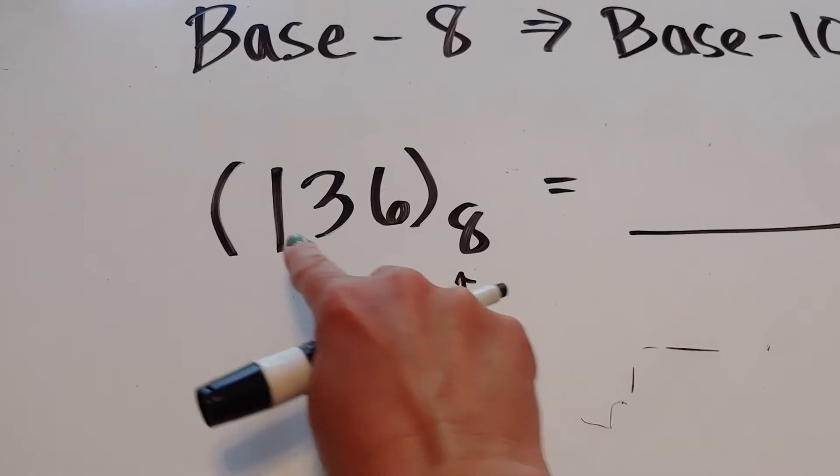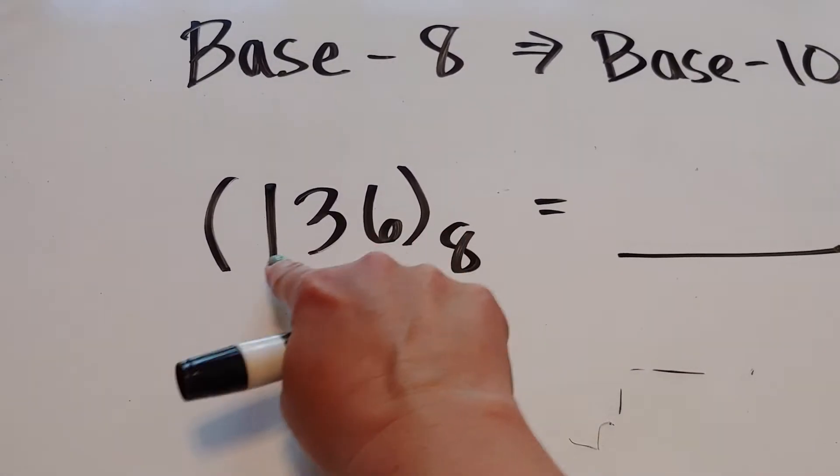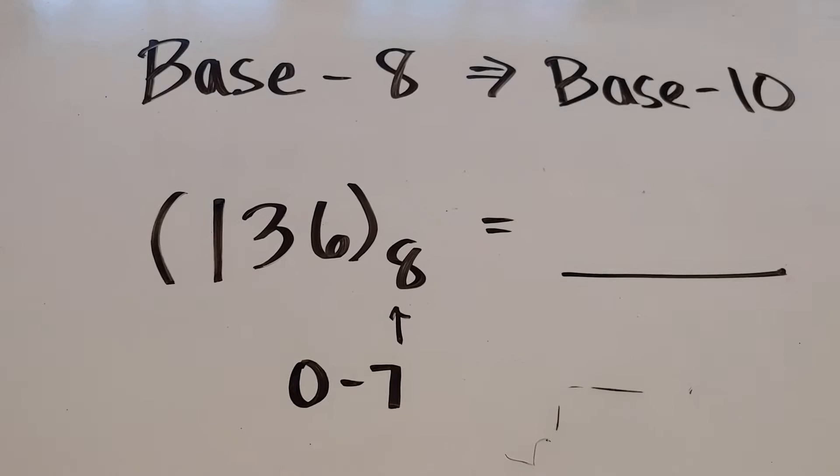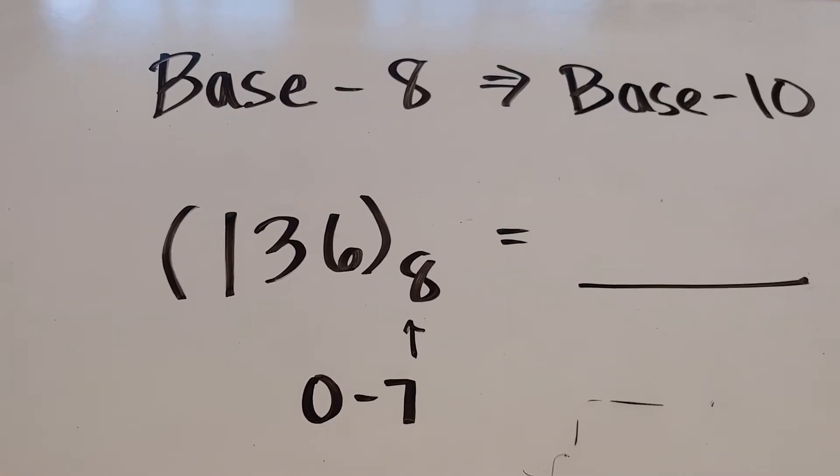So for base 8, you can see any digits 0 through 7. So if somebody wrote a 9 in here, I'd know it was not correct.